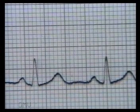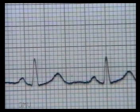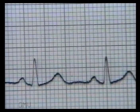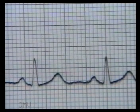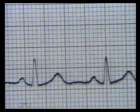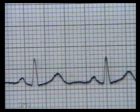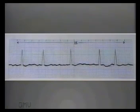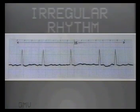In this ECG, count the RR interval — it is 18 small squares, so the rate is 84 per minute, which is within normal range. Normally, the RR interval should be between 15 to 25 small squares, corresponding to 60 to 100 per minute.